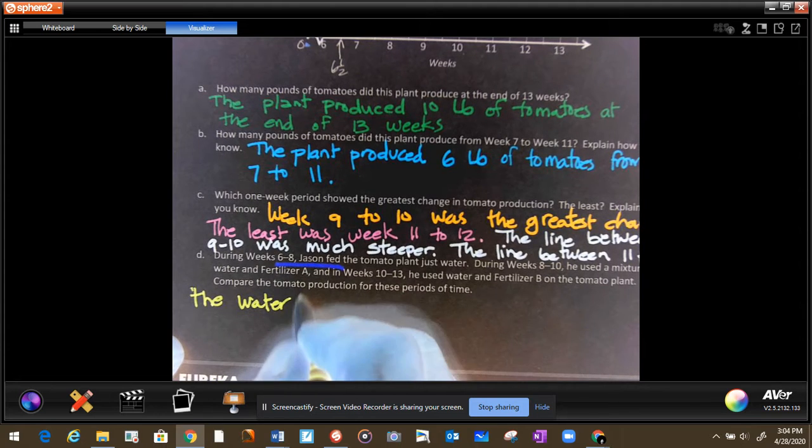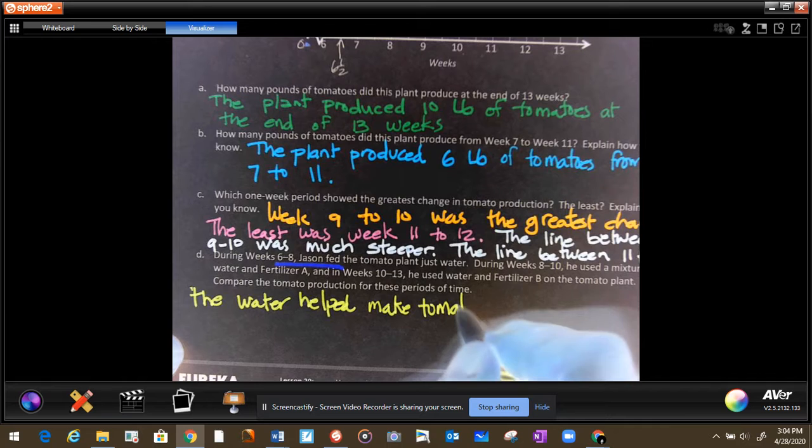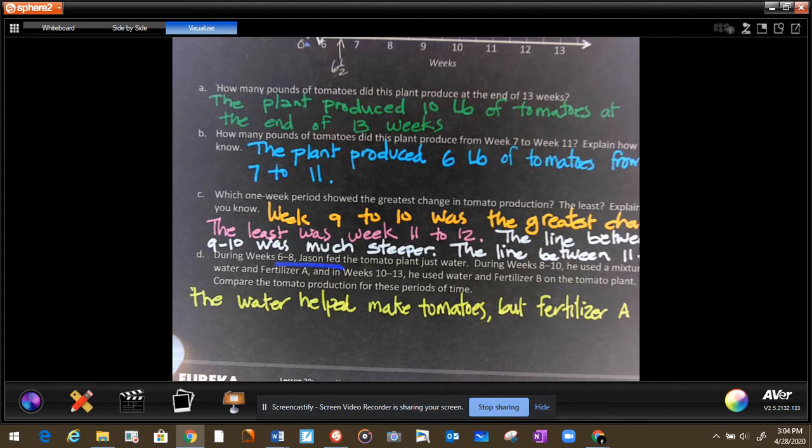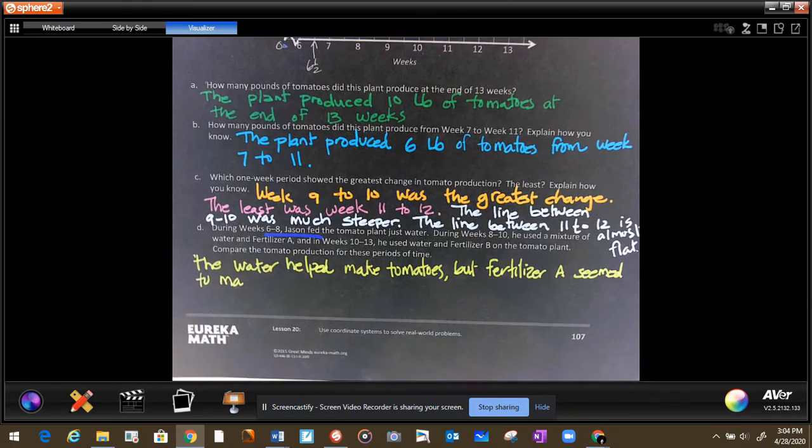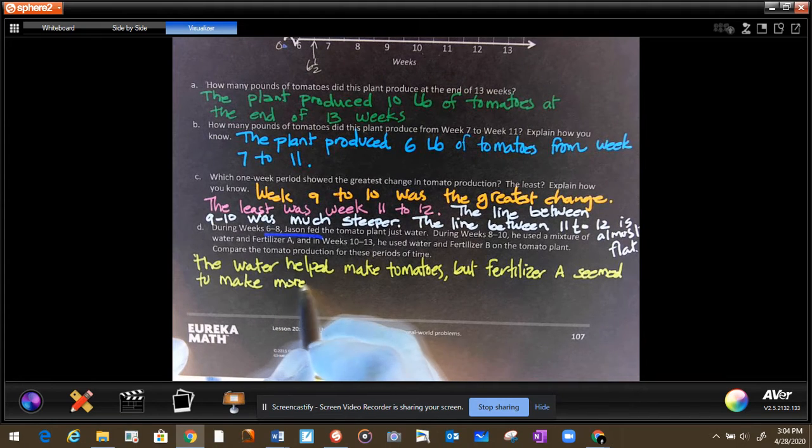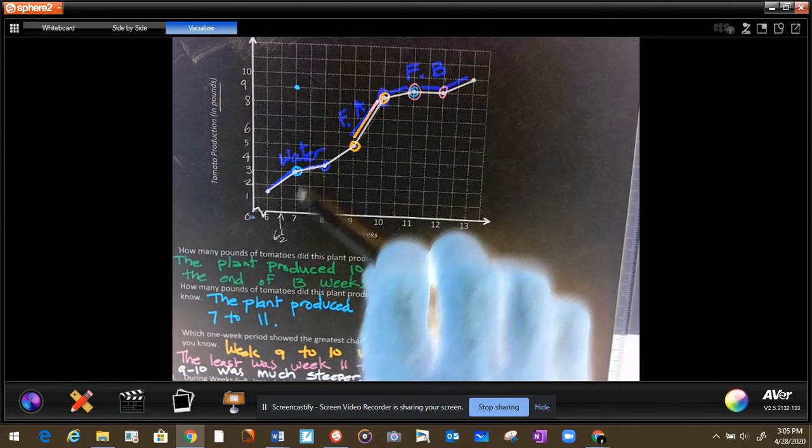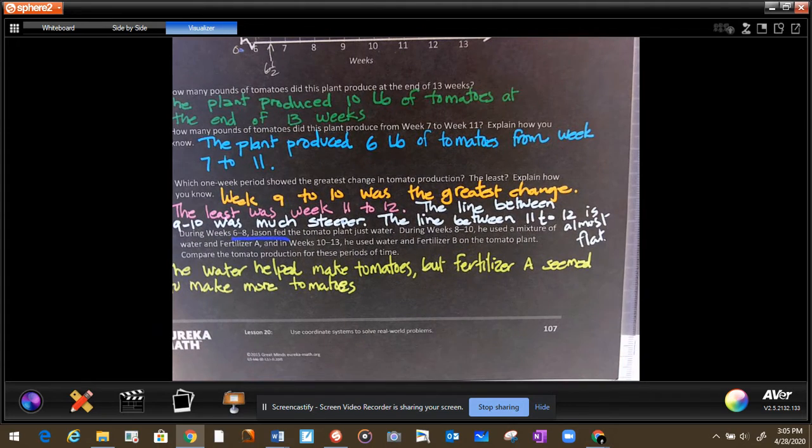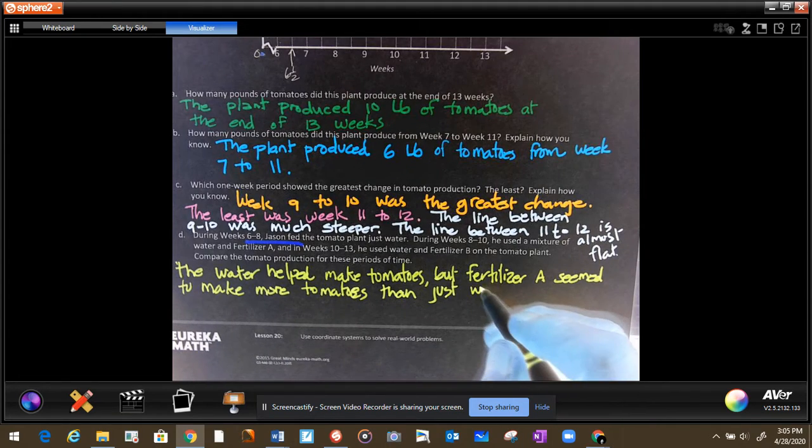The water helped. But fertilizer, fertilizer A seemed to make more tomatoes. And that's what we analyzed when we looked at this. If we compare this segment to this segment, then on this one there were more tomatoes. It grew more. And the last one, then just water. Let's compare them.